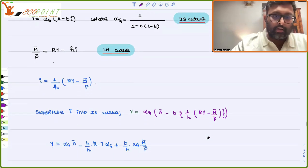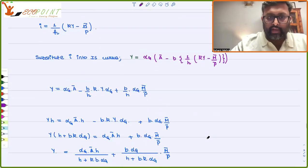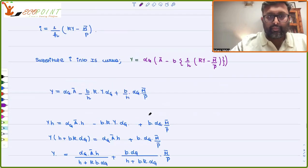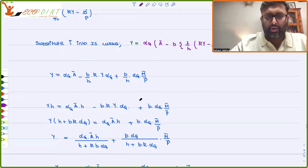So this is what, and once I will solve this, I will be getting this expression. Y is equal to alpha G A bar minus B by H KY alpha G plus B by H alpha G M bar by P bar and so on.